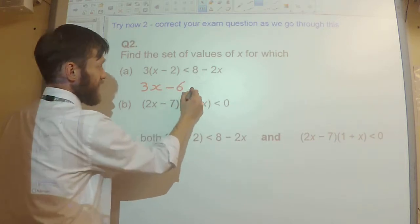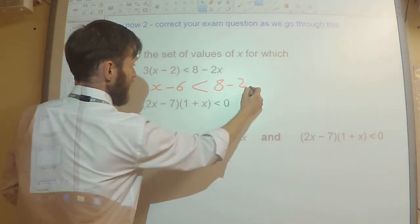So I'll get 3x minus 6, that's got to be less than 8 minus 2x.